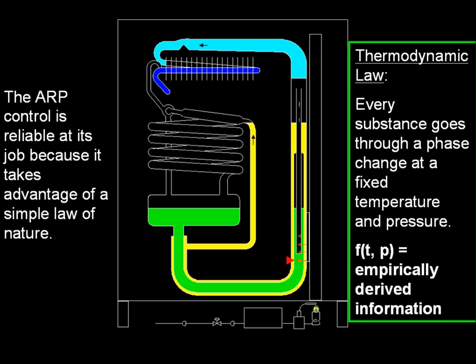The ARP control is reliable at its job because it takes advantage of a simple law of nature: the thermodynamic law that every substance goes through a phase change at a fixed temperature and pressure. The analogy to this is that at sea level, water boils at 212 degrees Fahrenheit. And as one raises altitude, the pressure goes down — therefore, the point of boiling goes down, so it takes longer to cook food.